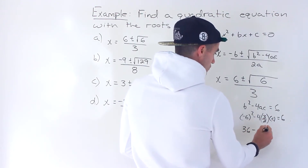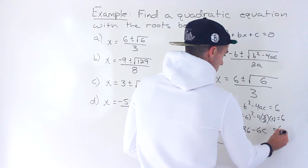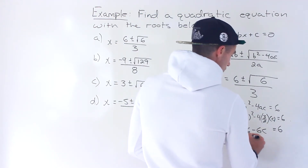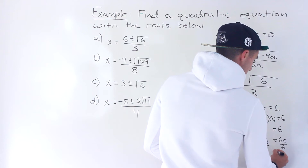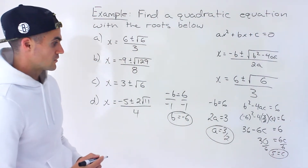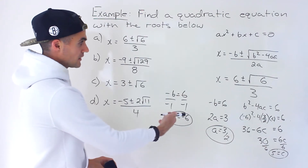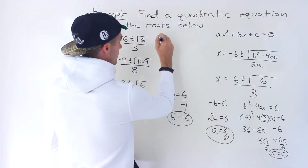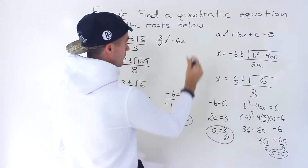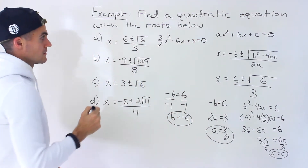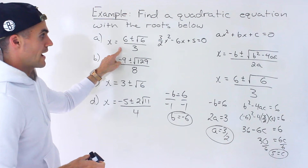So we have 36 minus 4 times 3/2 times c equals 6. That gives us 36 − 6c = 6. Bringing terms over: 36 − 6 = 30, so 6c = 30, meaning c = 5. We have our a, b, and c values. Plugging those in, we get (3/2)x² − 6x + 5 = 0.